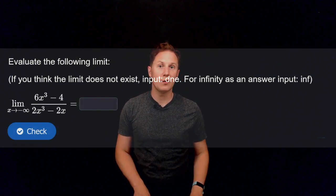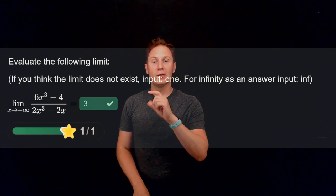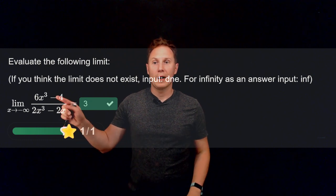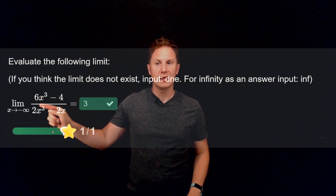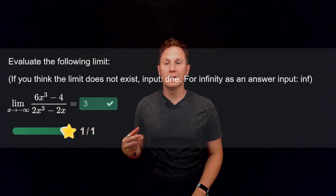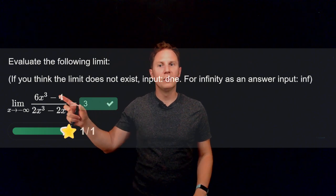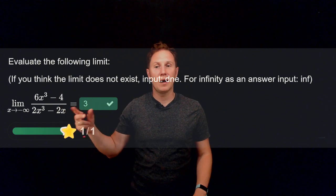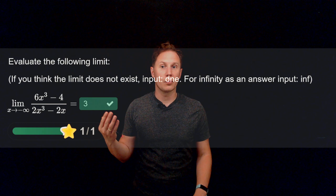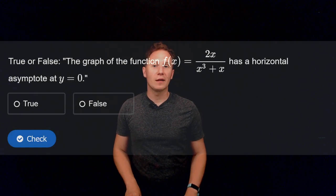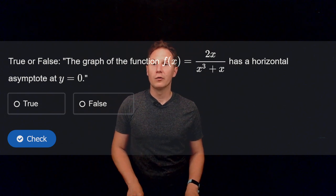Next, evaluate this limit at infinity. The answer is 3. In this case the degrees of the numerator and denominator both match — both are cubic in x. So it is the leading coefficients 6 and 2 that determine the value of the limit. As x gets greater and greater, the expression approaches the ratio of the dominant terms: 6x³ divided by 2x³, which simplifies to 6/2 = 3.